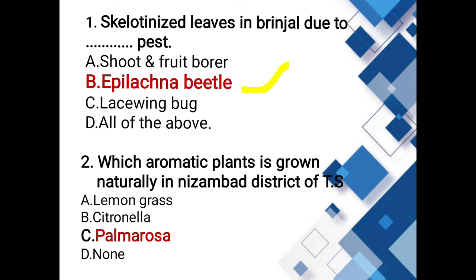Which aromatic plant is grown naturally in Nizamabad district of Telangana state? Options: Lemongrass, Citronella, Palmarosa, none of the above. The answer is Palmarosa. It is a naturally growing aromatic plant, also known as Suvassanicharvanti or Mokkal.